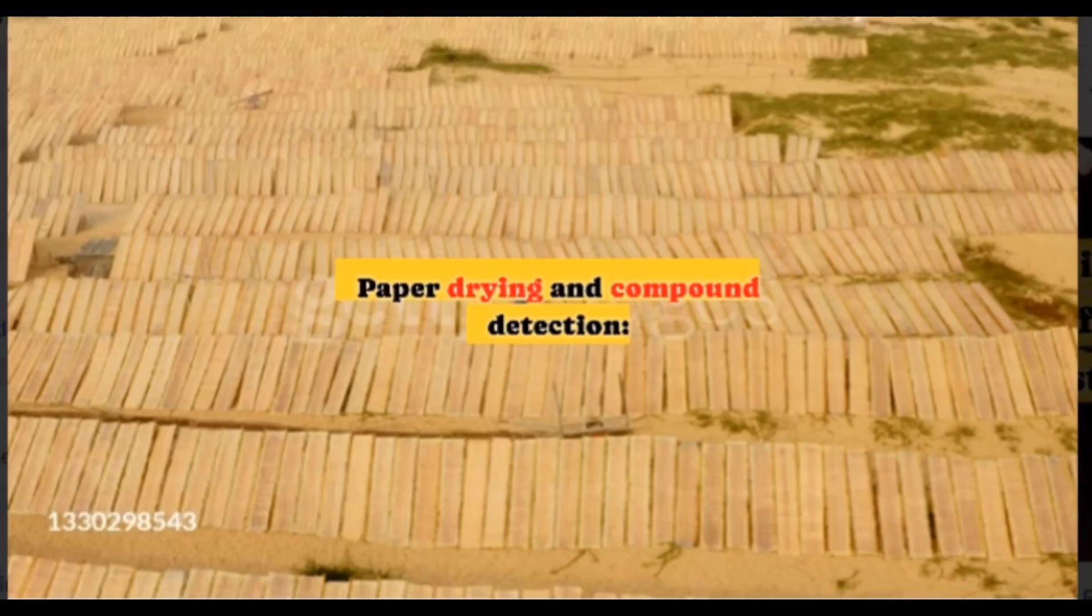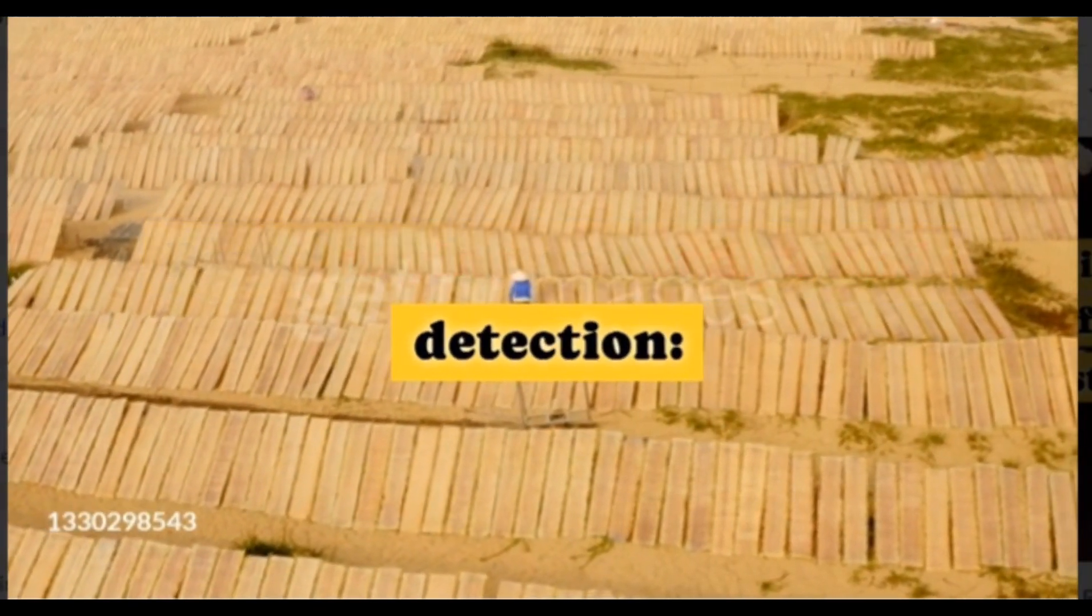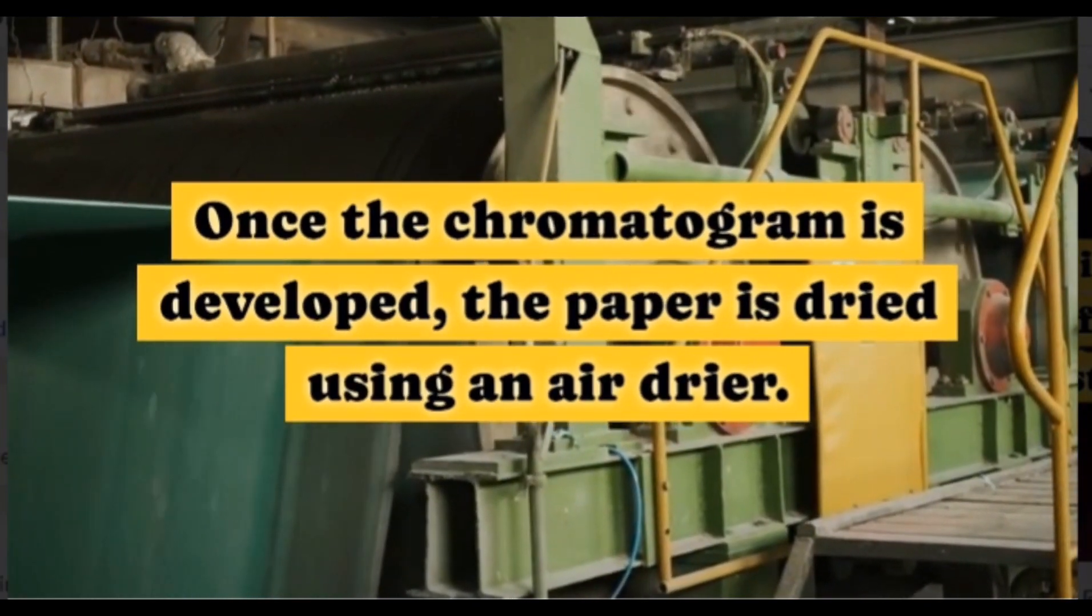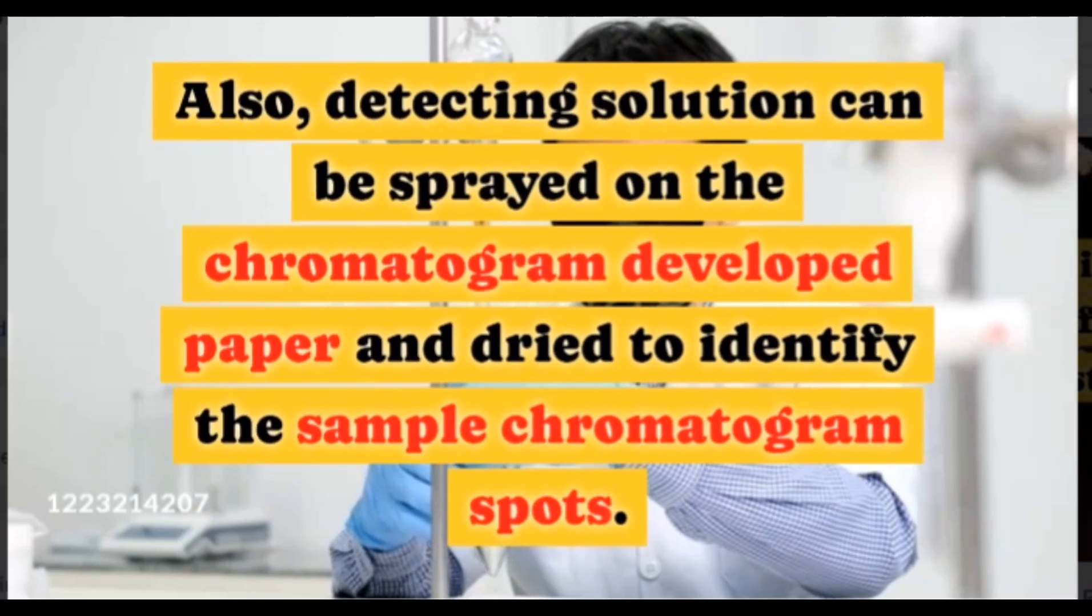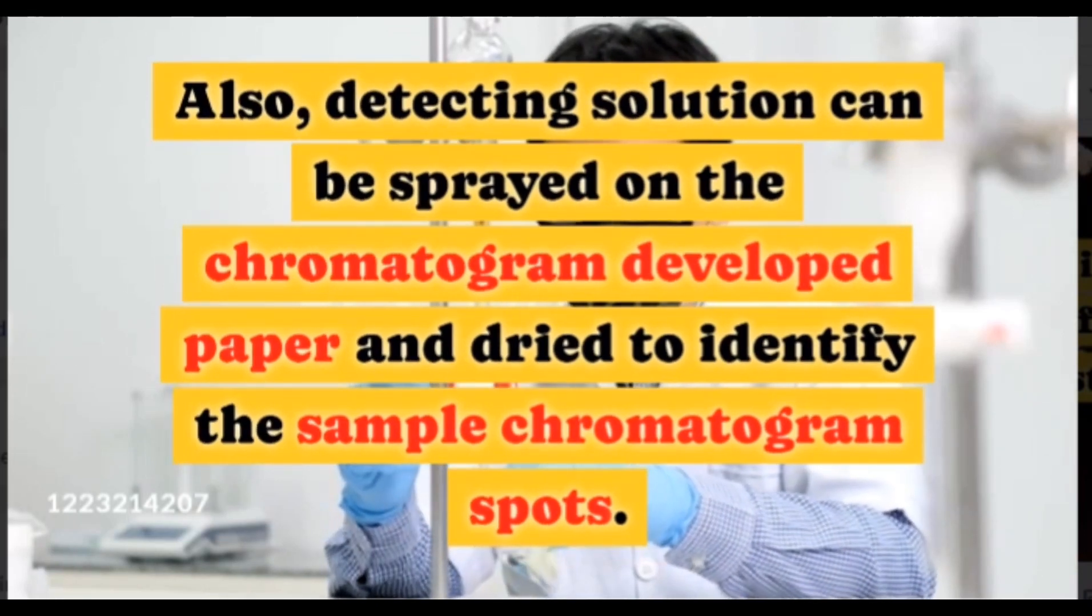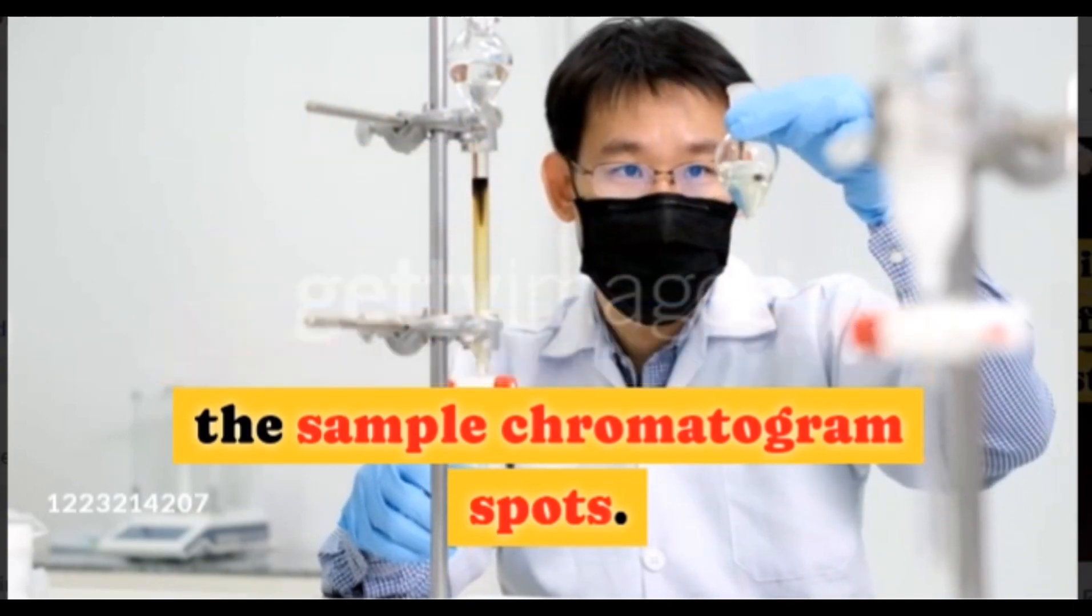Paper drying and compound detection. Once the chromatogram is developed, the paper is dried using an air dryer. Detecting solution can be sprayed on the chromatogram developed paper and dried to identify the sample chromatogram spots.